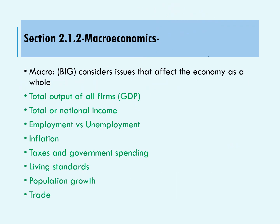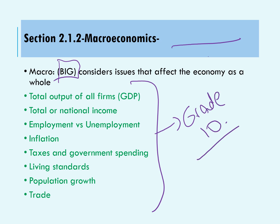Now macroeconomics — you can find that in your book on page 37. It's not detailed anymore; it's big decisions. Most of these points you will be studying in grade 10. Governments, no matter where in the world, are considered non-profit oriented and their major aim is to help the people. So we will be talking about how the government helps the people.